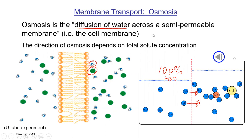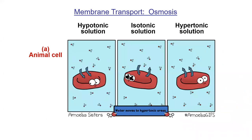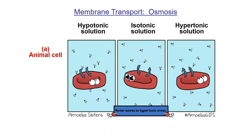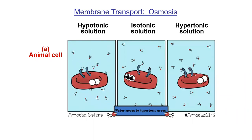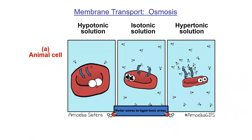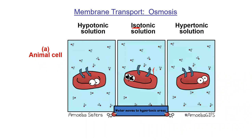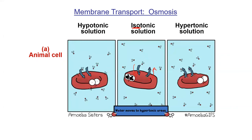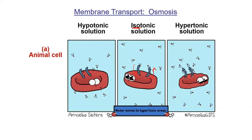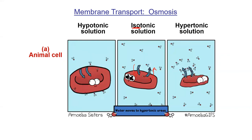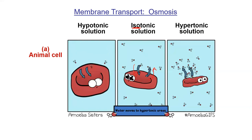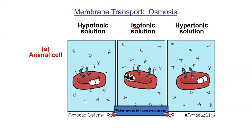Some definitions regarding osmosis: tonic means dissolved substances. ISO means the same — isotonic means water moves in and out at the same rate. For animal cells like red blood cells, isotonic is where you want to be. Your body carefully controls this, balancing water and electrolytes by excreting things in urine. If cells are placed in other solutions, it can be really bad for them.